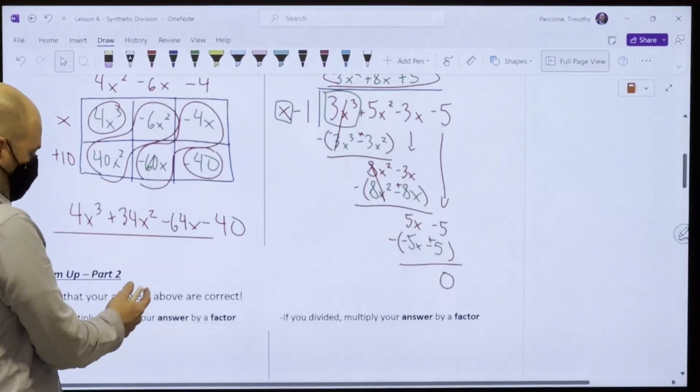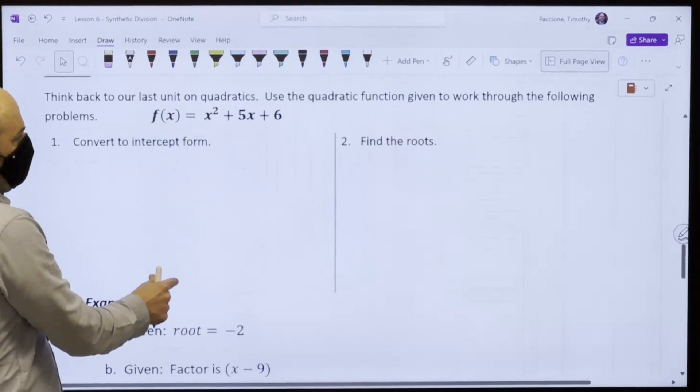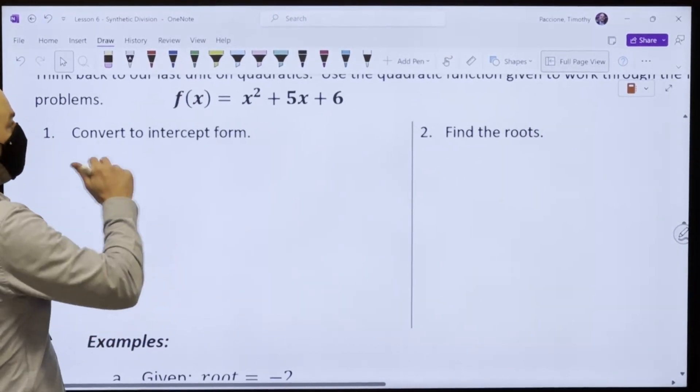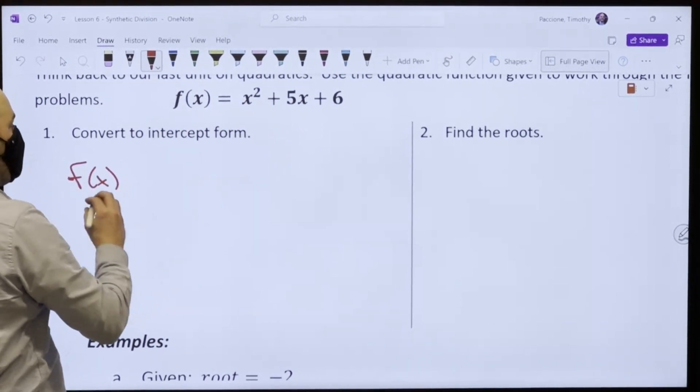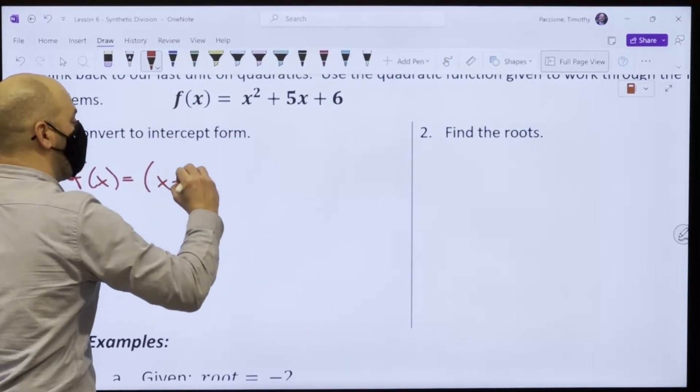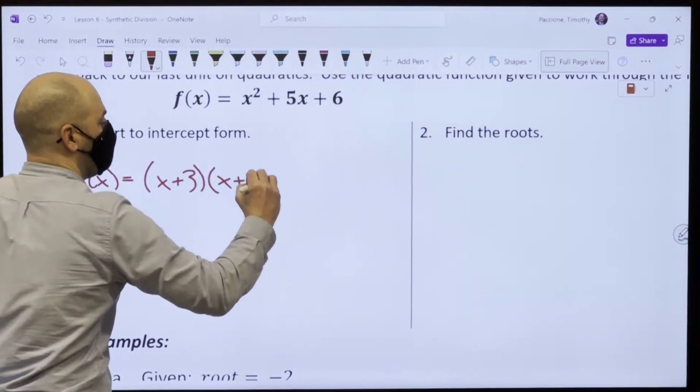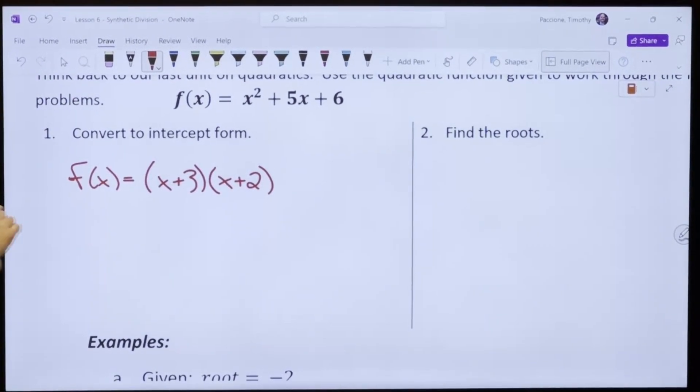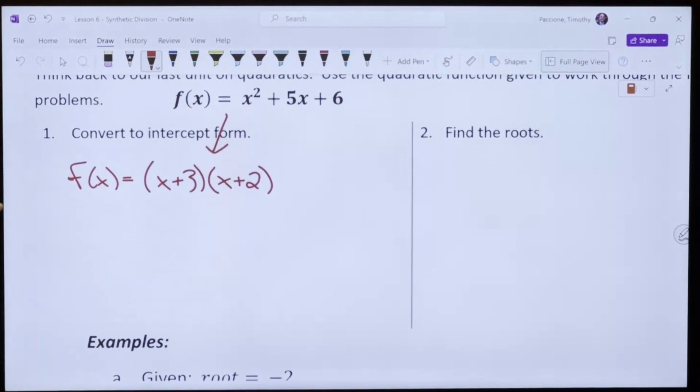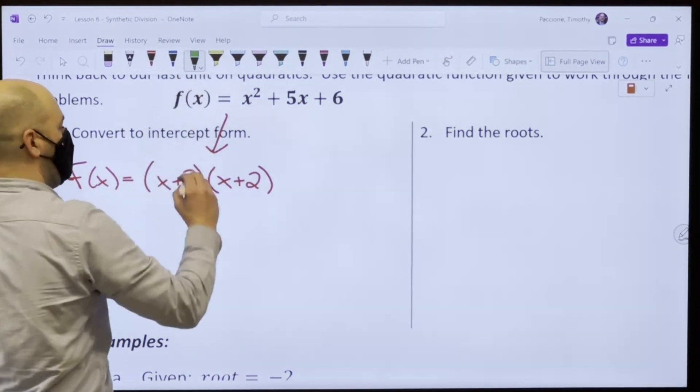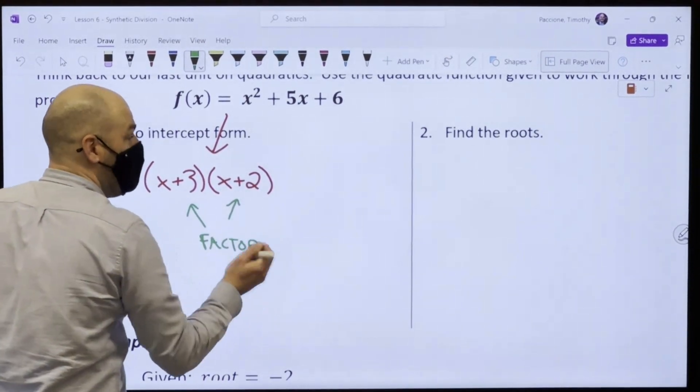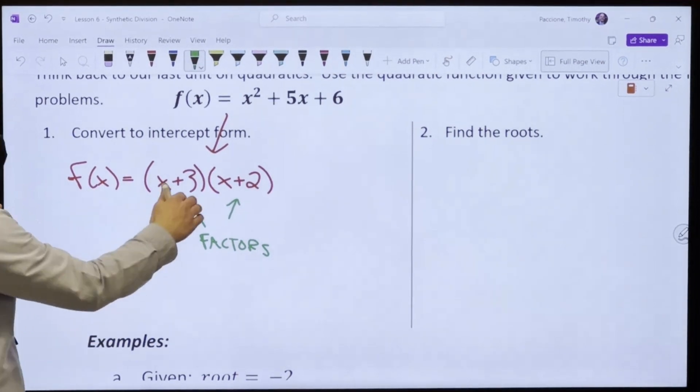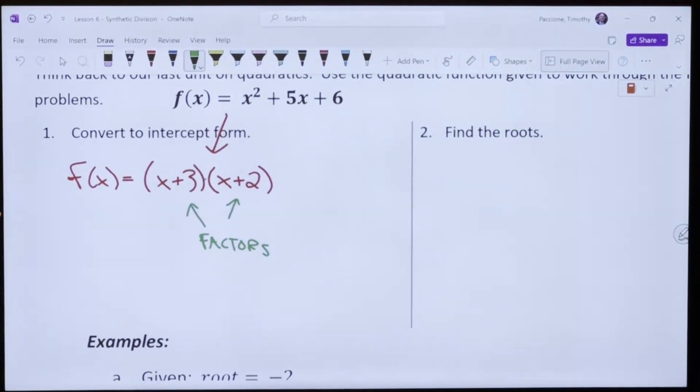Okay. So we've got to talk about roots and factors. Roots and factors. So if I was turning this into intercept form, I would say f of x. I would do the magic x and I would get f of x equals x plus 3 x plus 2. Right? I'm skipping the magic x because we've seen it a bunch. Right? This becomes this. We call this intercept form. We also call it factored form. Why? Because these are factors. What are factors? Factors are things you can multiply to get back to the first thing. Right? This times this is that. Okay? That's a factor.